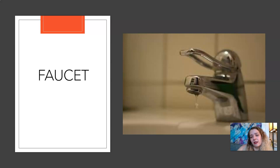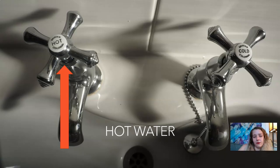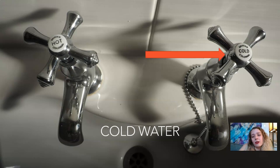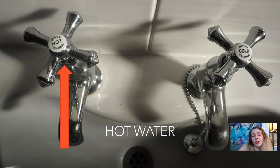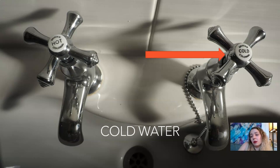Faucet. Water comes out of the faucet. Faucet. Hot water — I would say this is a hot water knob. So hot water, cold water. Usually hot water is red colored or it says hot. Cold is blue or says cold.